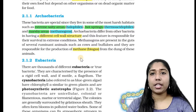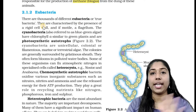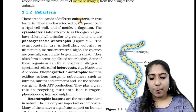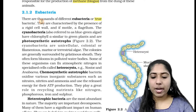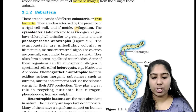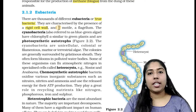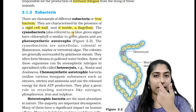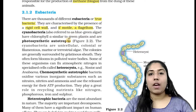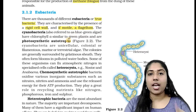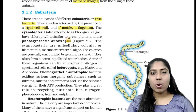The next type is eubacteria, also called true bacteria. There are thousands of different eubacteria. They are characterized by the presence of a rigid cell wall and, if motile, a flagellum. If they have a flagellum, they can move.